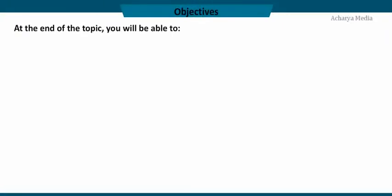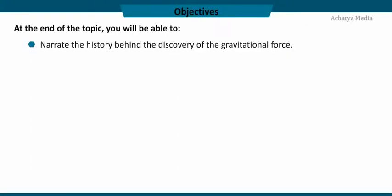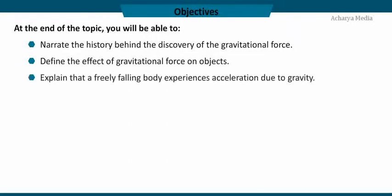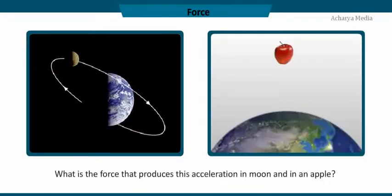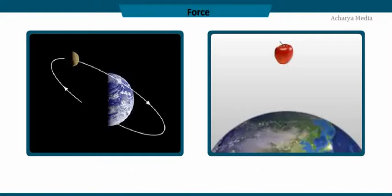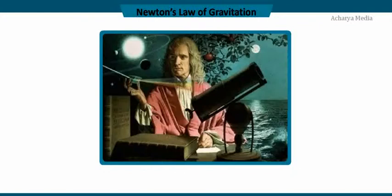At the end of the topic you will be able to narrate the history behind the discovery of the gravitational force, define the effect of gravitational force on objects, explain that a freely falling body experiences acceleration due to gravity, differentiate mass and weight of a body, and relate how all objects in the universe are under the influence of the same force. Isaac Newton realized that the motion of a falling apple and the motion of the moon were both caused by the same force: the gravitational force.